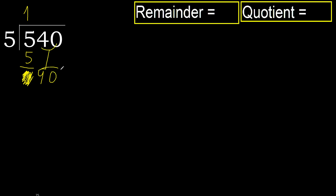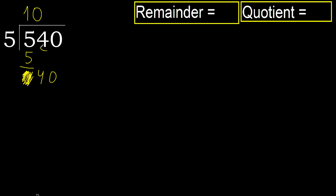2 numbers, therefore here complete. Always complete with 0, complete with 0 because here there are 2 digits — 1, 2. Ok.